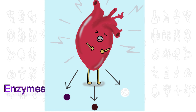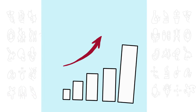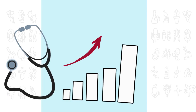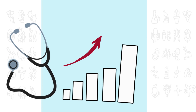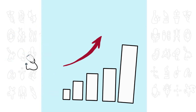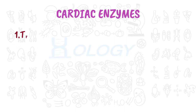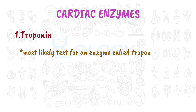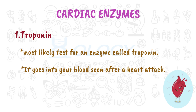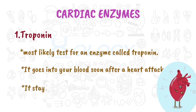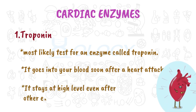After a heart attack, the level of these enzymes can get quite high, so checking them is a good way for your doctor to know something serious is going on. Your doctor will most likely test for an enzyme called troponin, which goes into your blood soon after a heart attack and stays at high levels even after other enzymes have returned to normal.